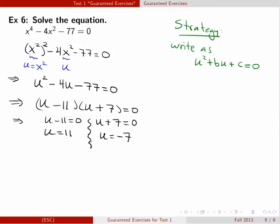Right here to continue we need to make a replacement. We're going to go back and replace u with x squared. So this will give us x squared equals 11 and x squared equals negative 7.